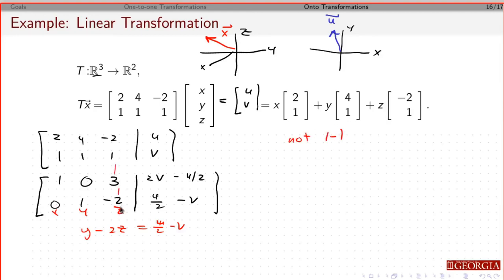And again, this column has no pivot. If I look at the rows, though, every row has a pivot, so there's no restriction on u and v. I can always find an x, y, and z, at least one, no matter what u and v you give me. So this thing is onto.